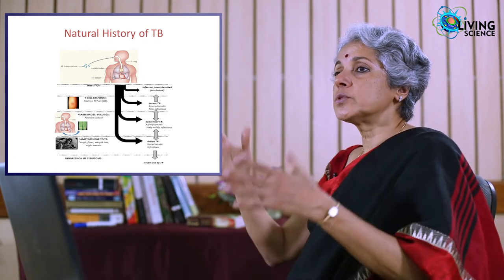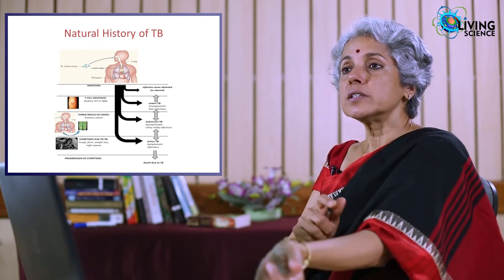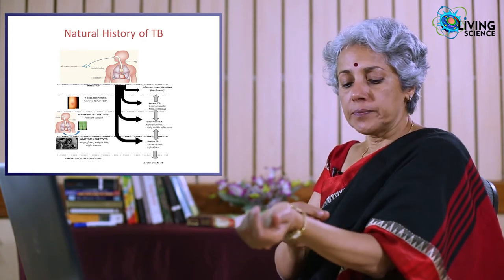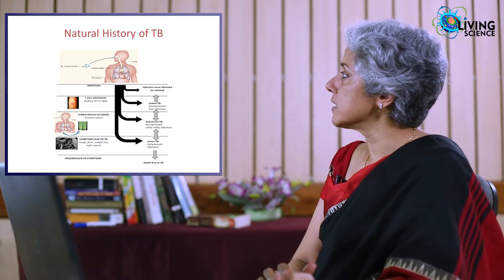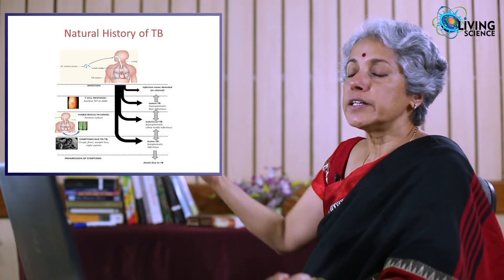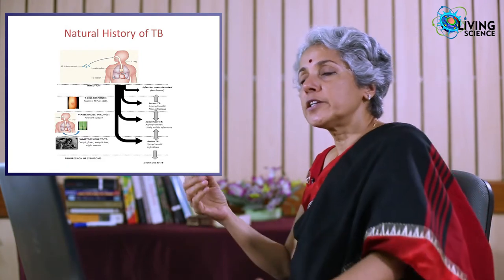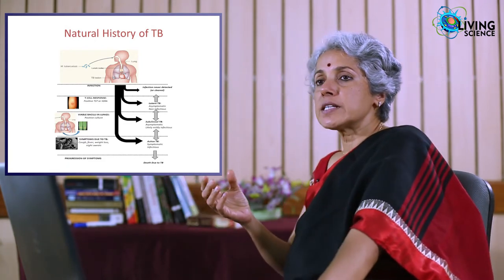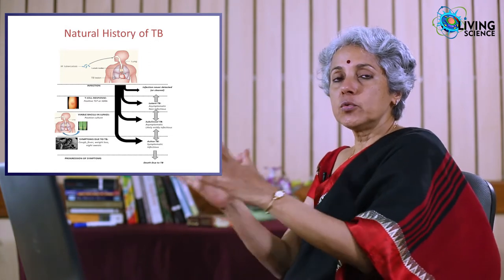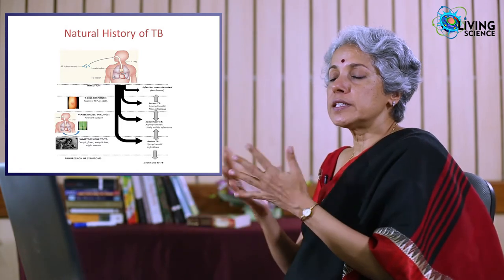You can see on the left a picture of a tuberculin skin test, discovered more than a hundred years ago. You inject the antigen — called a purified protein derivative — and measure the infiltration after 48 hours. There is also an in vitro test called the interferon gamma release assay, which looks at interferon gamma production by T cells after stimulation with TB antigens. The old way is to do it in the skin; the new way is to draw blood and do it in a test tube.